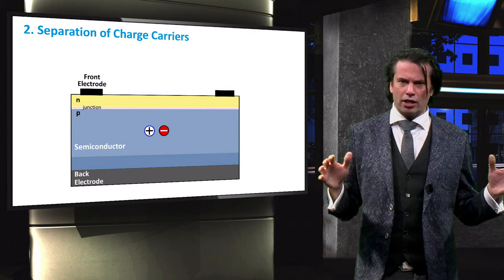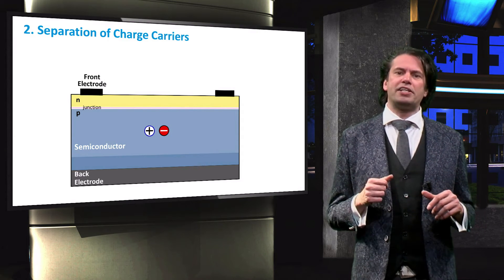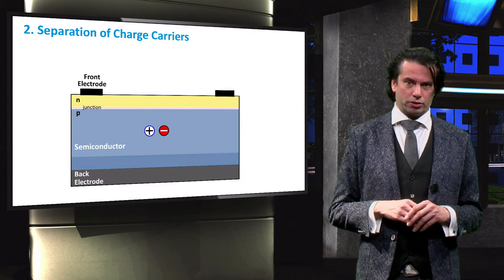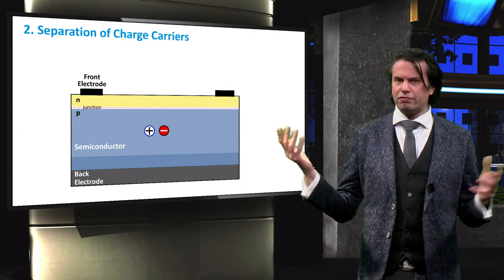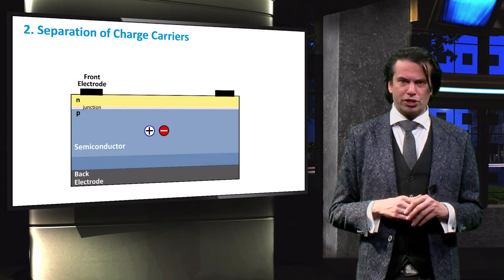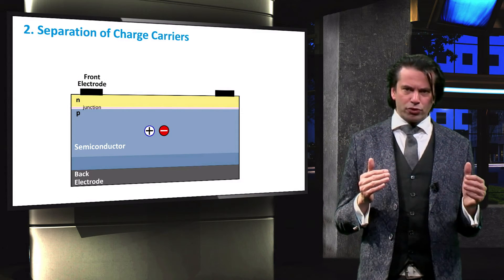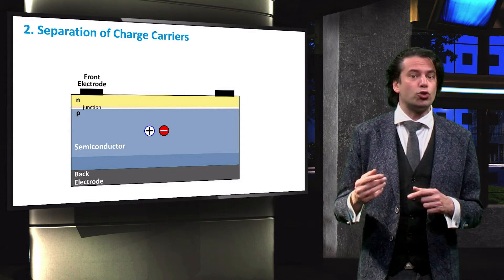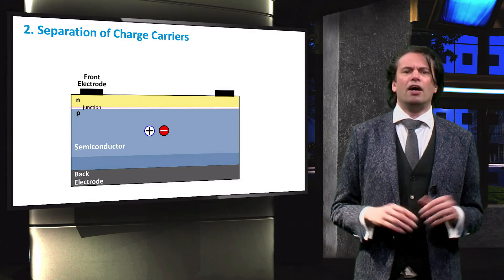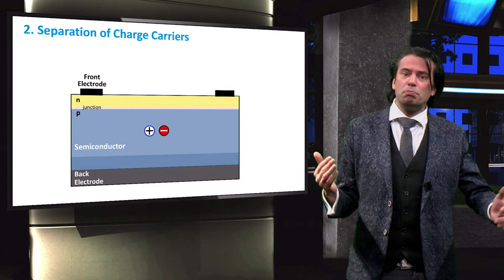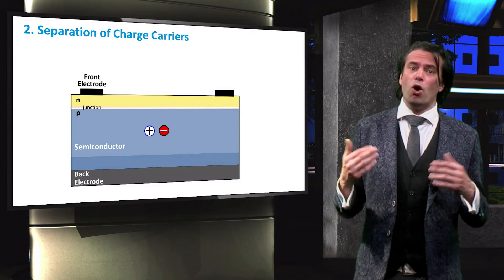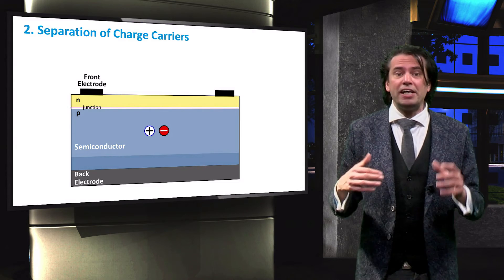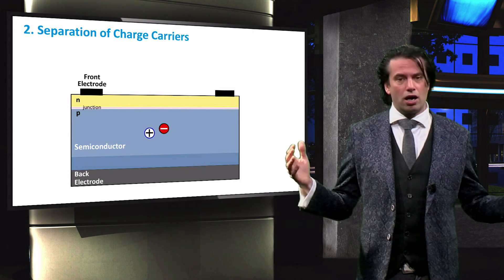In our solar cell here, the charges were generated in the P-type semiconductor. As you will learn in later videos, the P-n junction at the top of the solar cell only allows electrons to pass through and the junction at the bottom of the cell only allows holes to pass through. Therefore the solar cell needs to be designed so that the mobile charge carrier eventually hit those barriers and are separated.